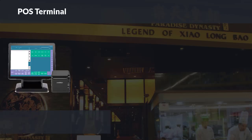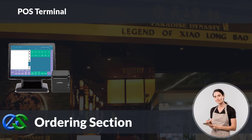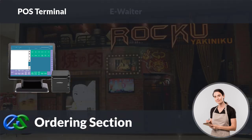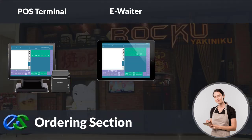You may add an ordering terminal for your floor staff to place orders through the ordering terminal. The receipt printer prints out the customer's present bill for payment collection. Besides the ordering terminal, the E-Waiter concept allows your floor staff to place orders through a mobile tablet directly.